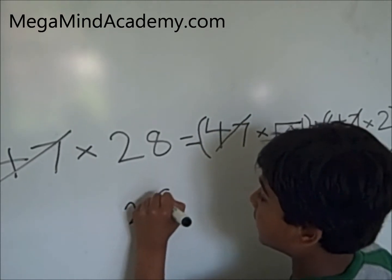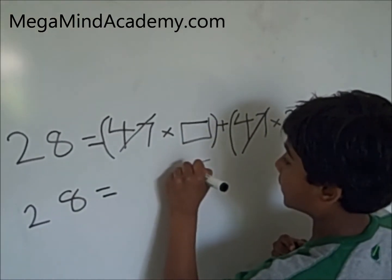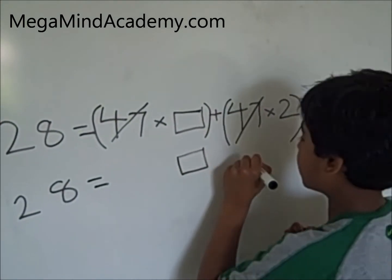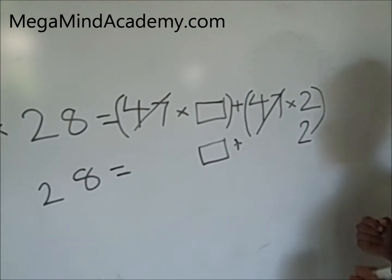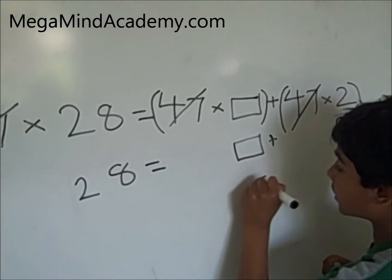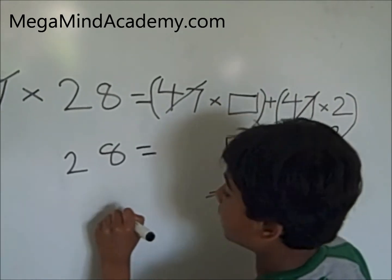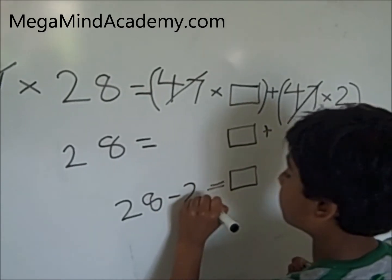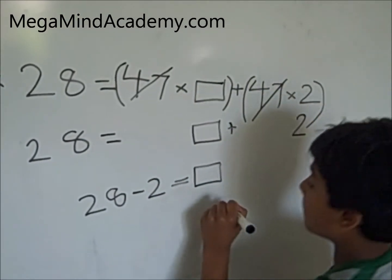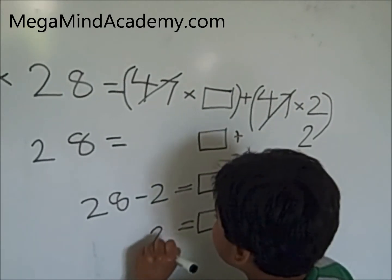Now let's simplify the equation. 28 equals box plus 2. Box equals 28 minus 2. Box equals 26.